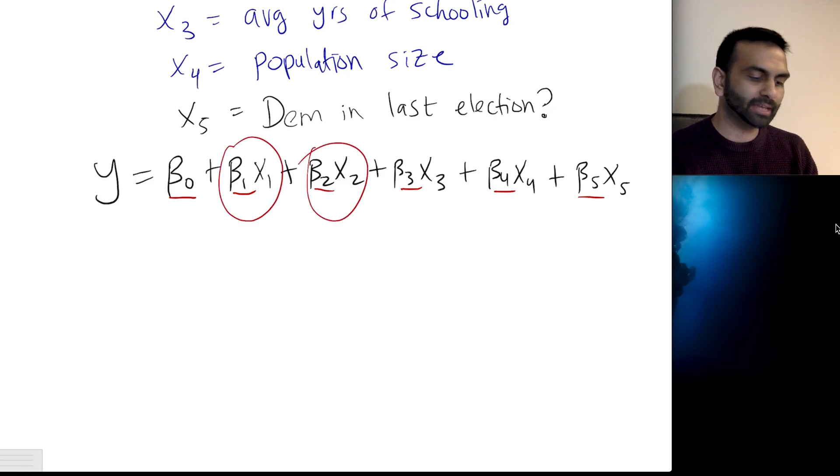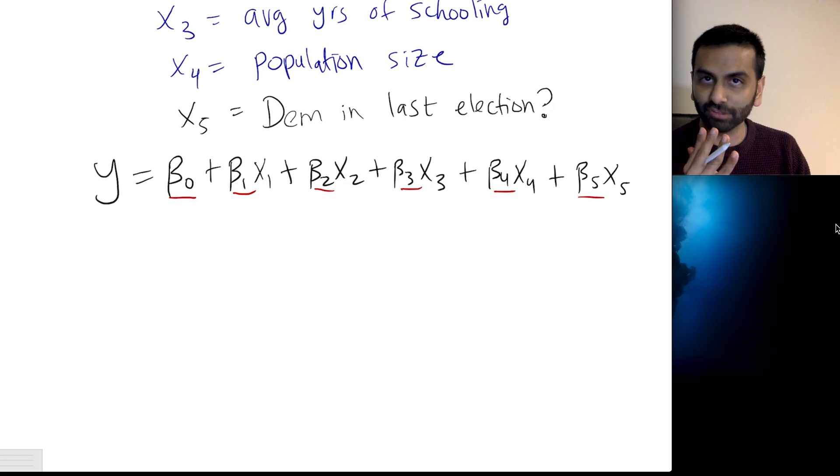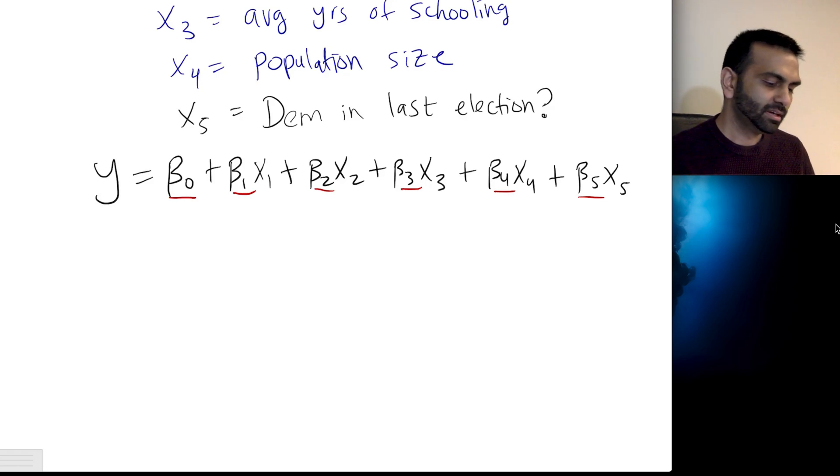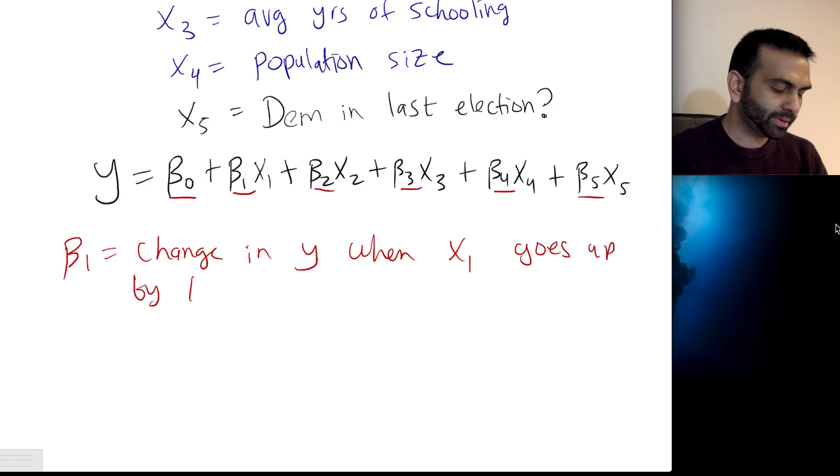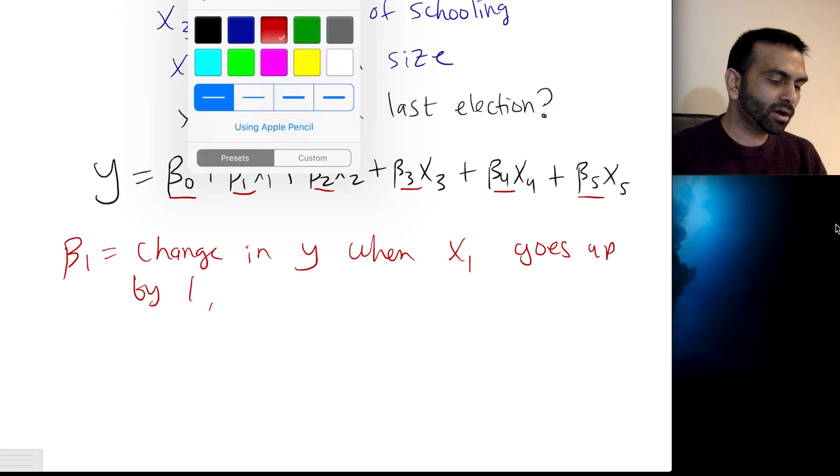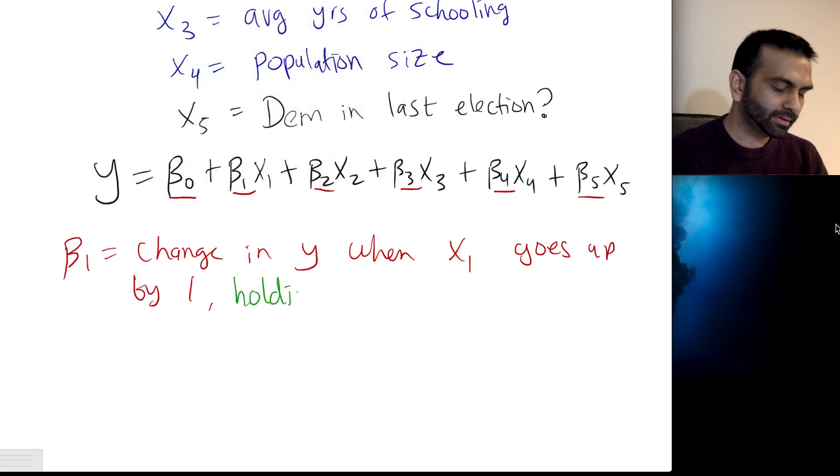So it's going to basically output six numbers for you, and those six numbers are these six betas. So these six betas, betas zero through five, are going to be what your computer outputs. And then your task is just to interpret them. Usually this intercept doesn't really have much of an interpretation in most contexts, so don't even worry about it. But what it is, is it's just the predicted y value when every x is zero. That sort of doesn't make sense in this case. What does it mean for a population to be zero?